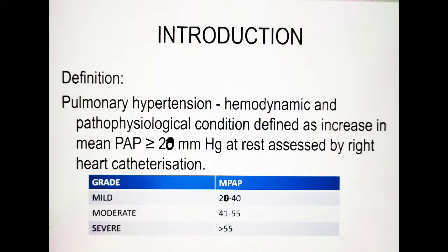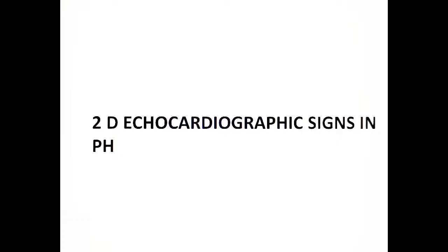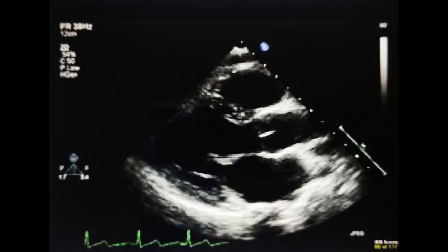We are dealing with the echocardiographic evaluation of pulmonary arterial hypertension, so we will discuss the echo findings. In 2D echocardiography, we grossly evaluate the pulmonary artery, ventricles (especially the right ventricle), IVC, and right atrium. If more than two or three echocardiographic signs of pulmonary arterial hypertension are seen, we can label it as pulmonary arterial hypertension.